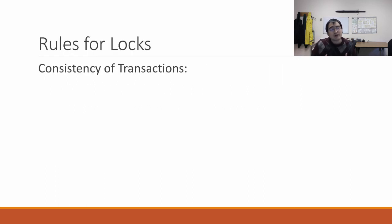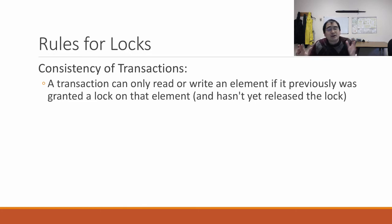So the rules for locks are twofold. One is called consistency of transactions. And now these rules sound complicated, but they're actually quite intuitive. A transaction is only allowed to read or write an element if it was previously granted a lock on that element. It got permission. The lock is what allows it to do the read and write. And it hasn't released the lock before it tried to do the read and write. It's pretty obvious. It basically means in order to read or write, you better be holding the lock. And the only way for you to be holding the lock is that you were granted the lock and didn't give it up yet.